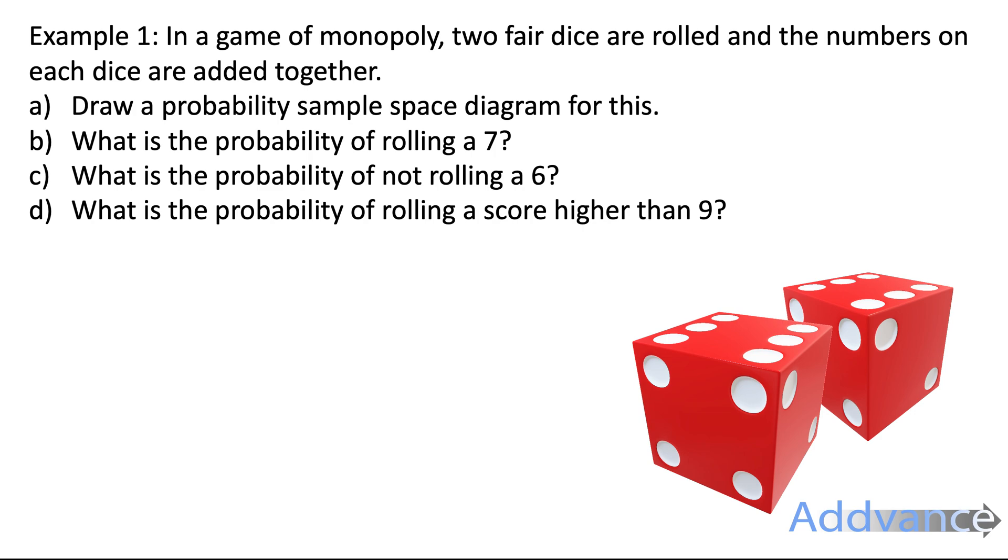For example, in a game of Monopoly two fair dice are rolled and the numbers on each dice are added together. We're going to draw a probability sample space diagram for this, then we're going to work out the probability of rolling a 7, then probability of not rolling a 6, and then the probability of rolling a score higher than 9.